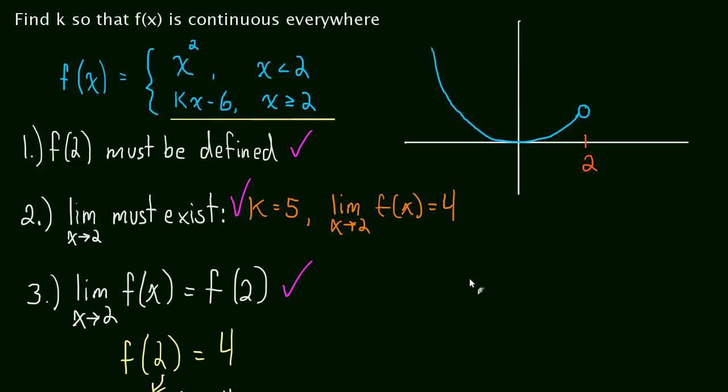And this function now is continuous everywhere. As long as k is equal to 5. So, we found our k. k is equal to 5. And the problem is over.